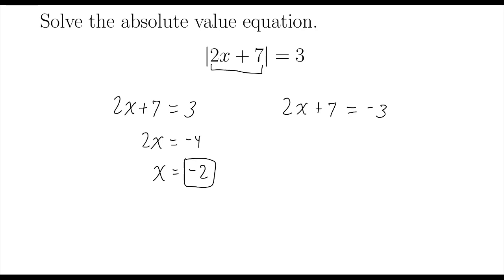On the right side, subtract 7 from both sides. Negative 3 minus 7 is negative 10. Divide both sides by 2. Negative 10 divided by 2 is negative 5. So negative 5 and negative 2 are my solutions.